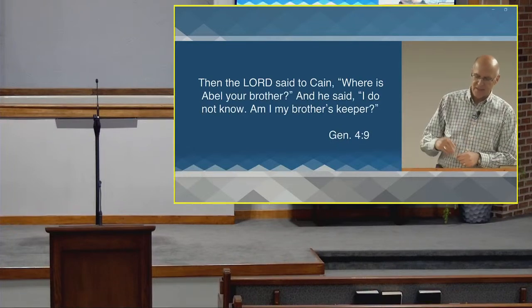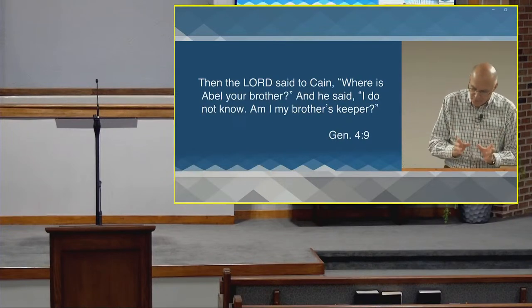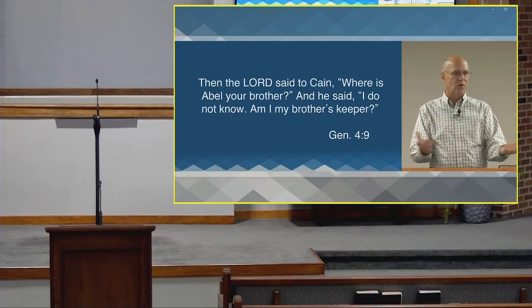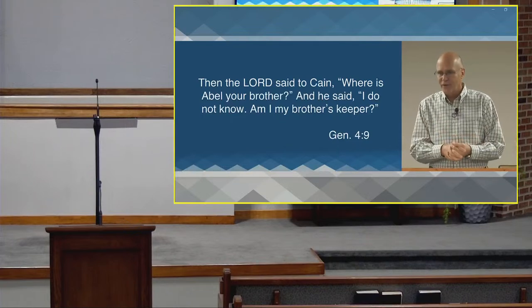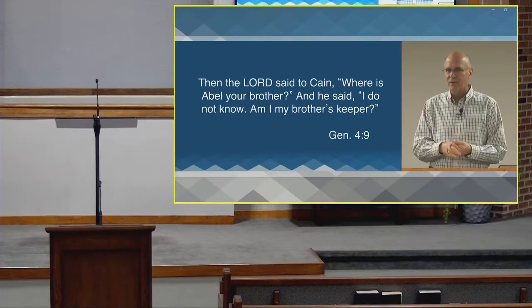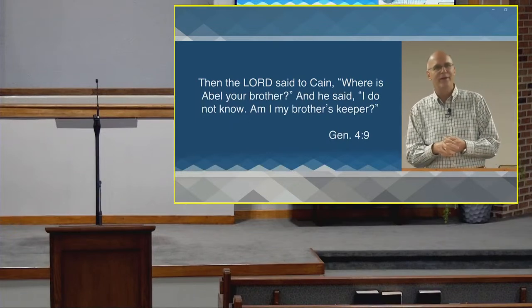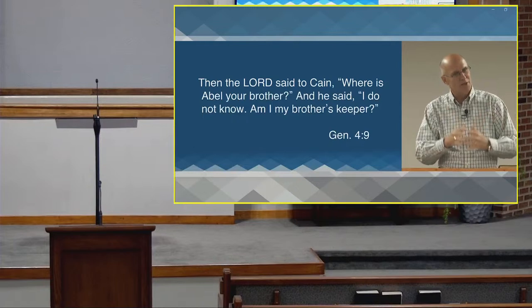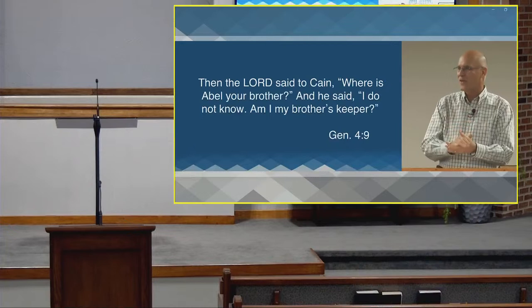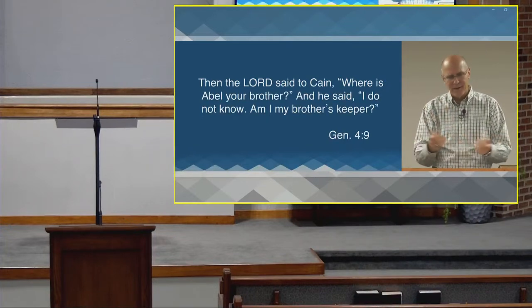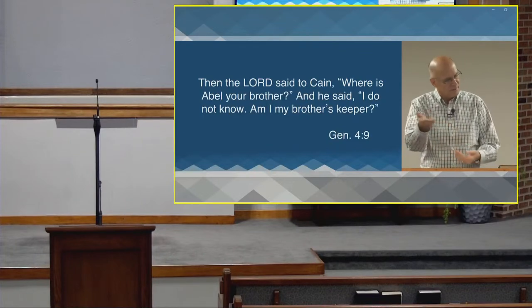God finds Cain to deal with him. God doesn't really need the information, but like with Adam and Eve, he opens up the question to elicit from Cain some sort of answer, some sort of repentance. It's like a bad thing has happened — you've done that with your children, you know what happened, whatever it is, maybe they poured milk on the cat — you know what's happened and you know who did it, but you want to give them a chance. Say, do you know what happened here? To give them the opportunity to say, well, I didn't do it on purpose.